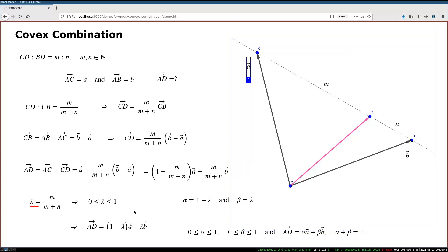When lambda hits exactly 0, AD will be exactly A, so this point D will coincide with C. When lambda is exactly 1, AD will be exactly B, so point D will coincide with B.